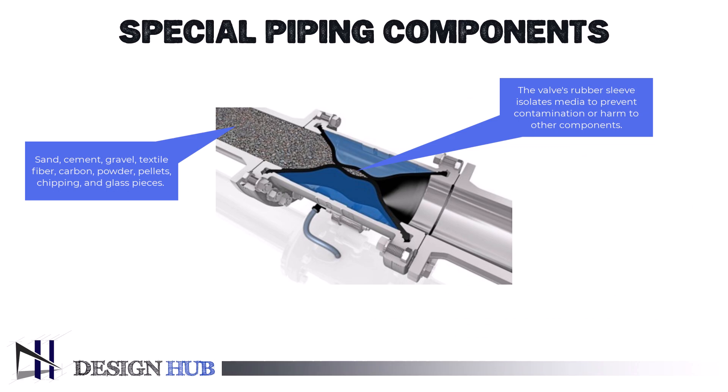Rubber hoses for air-operated pinch valves are typically pressed into place and centered by the socket covers of the housing ends. The valve shuts off as soon as pressured air enters the body — no additional actuator is needed. The force of the process flow causes the elastic rubber hose to begin to open when the air supply is cut off and the air volume exhausts. Sand, cement, gravel, textile fiber, carbon, powder, pellets, chipping, and glass pieces are examples of granular materials and slurries that work well with pinch valves.